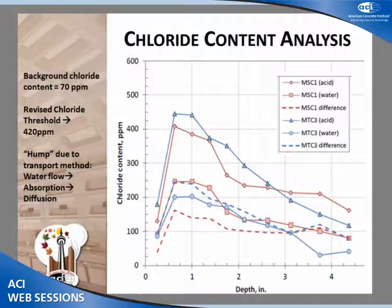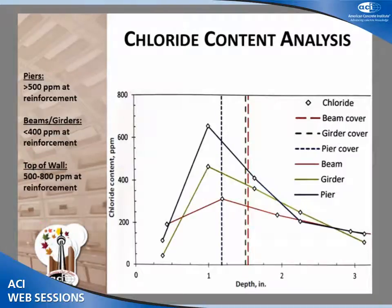Our average background chloride for the structure was 70 parts per million. So our particular chloride threshold for acid soluble becomes 420 parts per million rather than 350 parts per million. There is typically a peak or hump in chloride content around a half inch to an inch depth. At the surface, we have more or less the chloride content of the water itself — chloride ions are absorbed into the concrete and deposit heavily near the surface. The rest of the chlorides progress through the concrete by diffusion as the concentration decreases with depth.